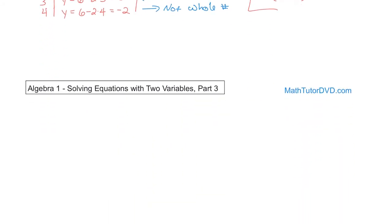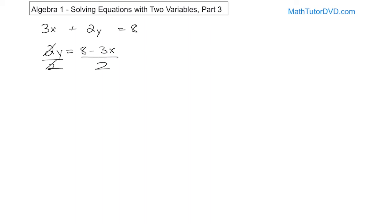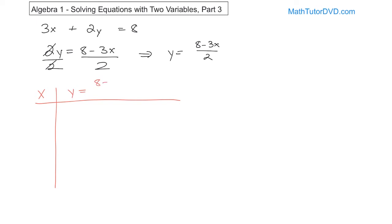Now we're going to do the same exact thing with one more problem to give you some practice. We only want to find solutions that are whole numbers. The equation for this next problem is 3x plus 2y equals 8. Same thing — we want to construct a table and solve for y. First, let's move the 3x over: 2y is equal to 8 minus 3x. Then divide by 2, so y is equal to (8 minus 3x) over 2. It's not the prettiest expression, but it gets the job done.